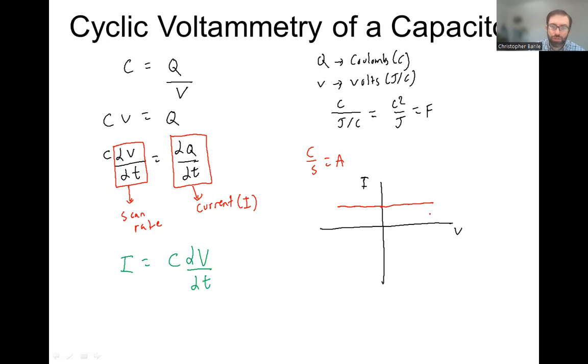until we reverse our scan rate. When we reverse our scan rate, now dv dt is negative, or each step is negative on dv. And so this is going to ideally hop down to the negative of itself. And then when we go back to positive scan rate, we're going to go back up to the positive. So ideally, the CV of a capacitor is a perfect rectangle.